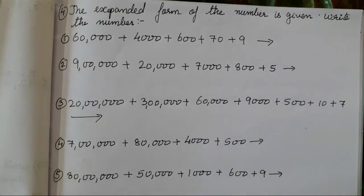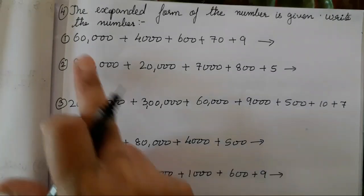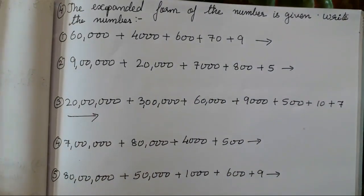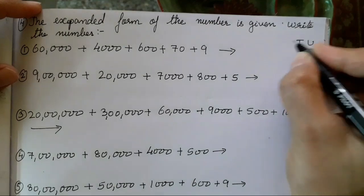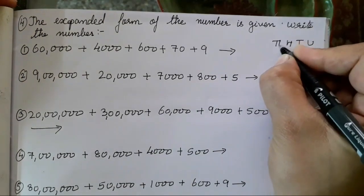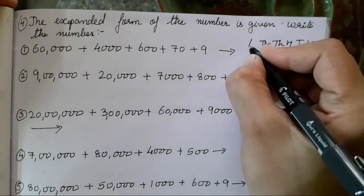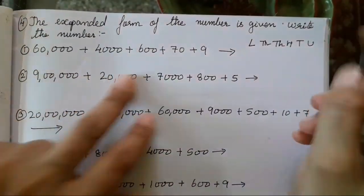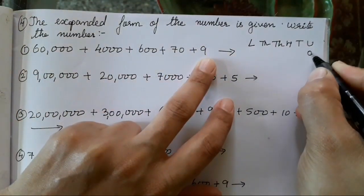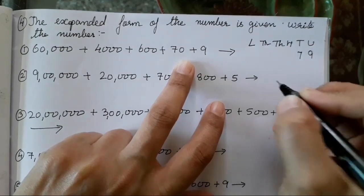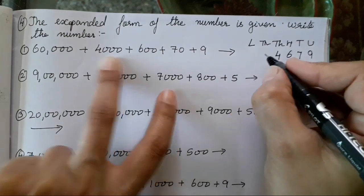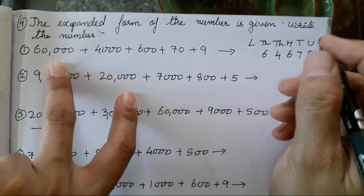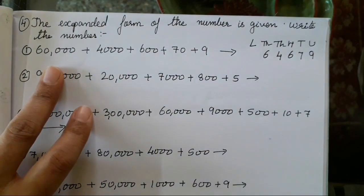Now we have to do the reverse — the ulta — of the expanded form. The expanded form has been given to us and we have to write the digits. It is very easy. Again the same unit, tens, hundred, thousand, ten thousand, and lakhs. Write the units so we can fill in the numbers. So: nine units, seventy, six hundred, four thousand, and sixty thousand. Lakhs has not been given so we will reduce it — we don't include that column.